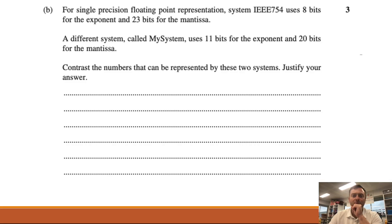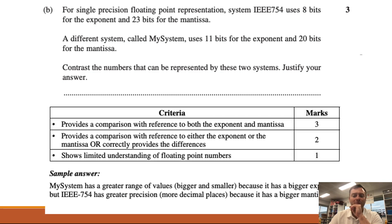For the single precision floating point representation system IEEE 754 using 8 bits for the exponent and 23 bits for the mantissa. A different system called MySystem uses 11 bits for the exponent and then 20 bits for the mantissa. Contrast the numbers that can be represented with the two systems. Justify the answers. So pause the video and have a go. So what you should see here 8 bits compared to 11 bits means the exponents can be bigger which makes the larger number, but then the accuracy is going to be suffered because the mantissa is not as long. So MyIEEE has a greater range of value, bigger and small, because it has a bigger exponent. But the IEEE has a greater precision because it has a bigger mantissa.